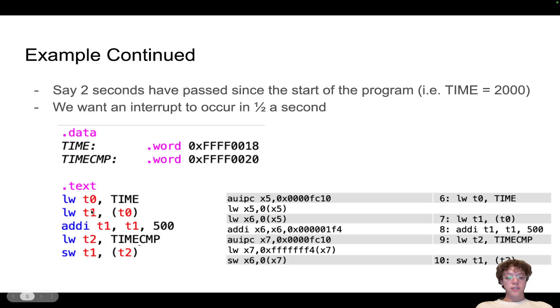So t1 is our TIME, we add 500, store that back into t1. Now what we do is we need to store the TIMECMP. So I first load the address of TIMECMP, or this value right here, into t2. So now in t2 we have the address of TIMECMP and in t1 we have TIME plus 500. So this store word finishes it for us: it sets TIMECMP equal to TIME plus 500.